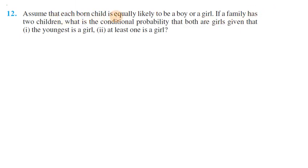Assuming that each born child is equally likely to be a boy or girl — if you have a boy or girl, there is an equal probability. If a family has two children, there are two subdivisions to consider.